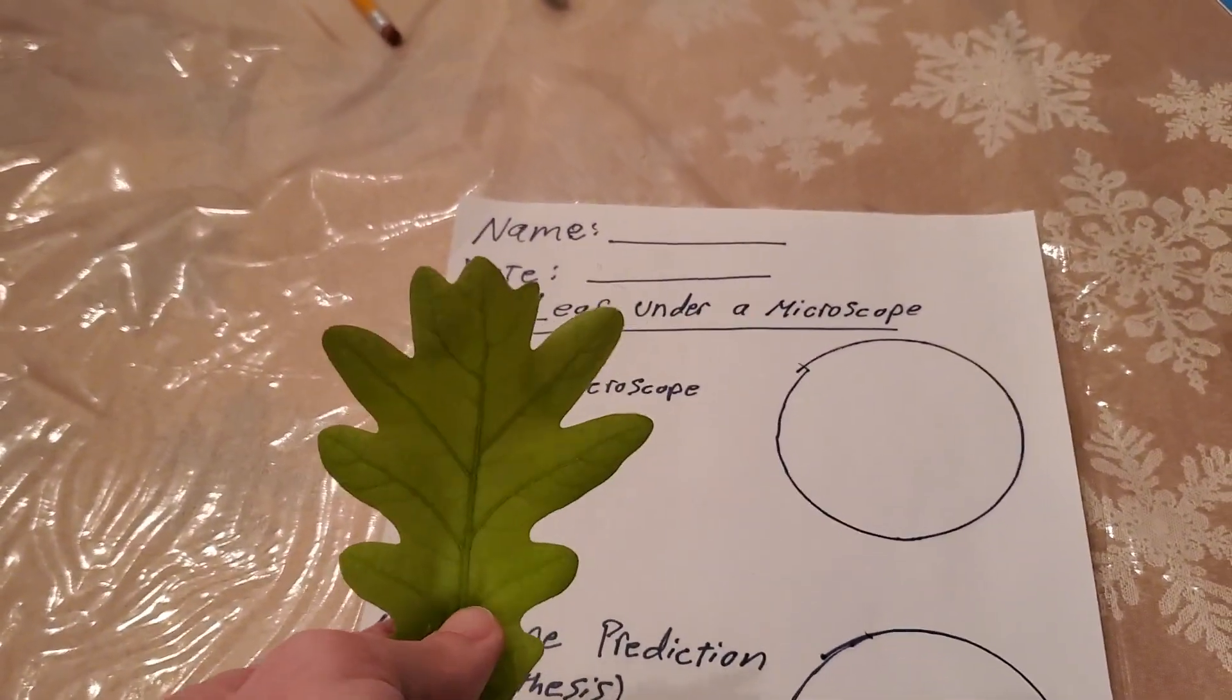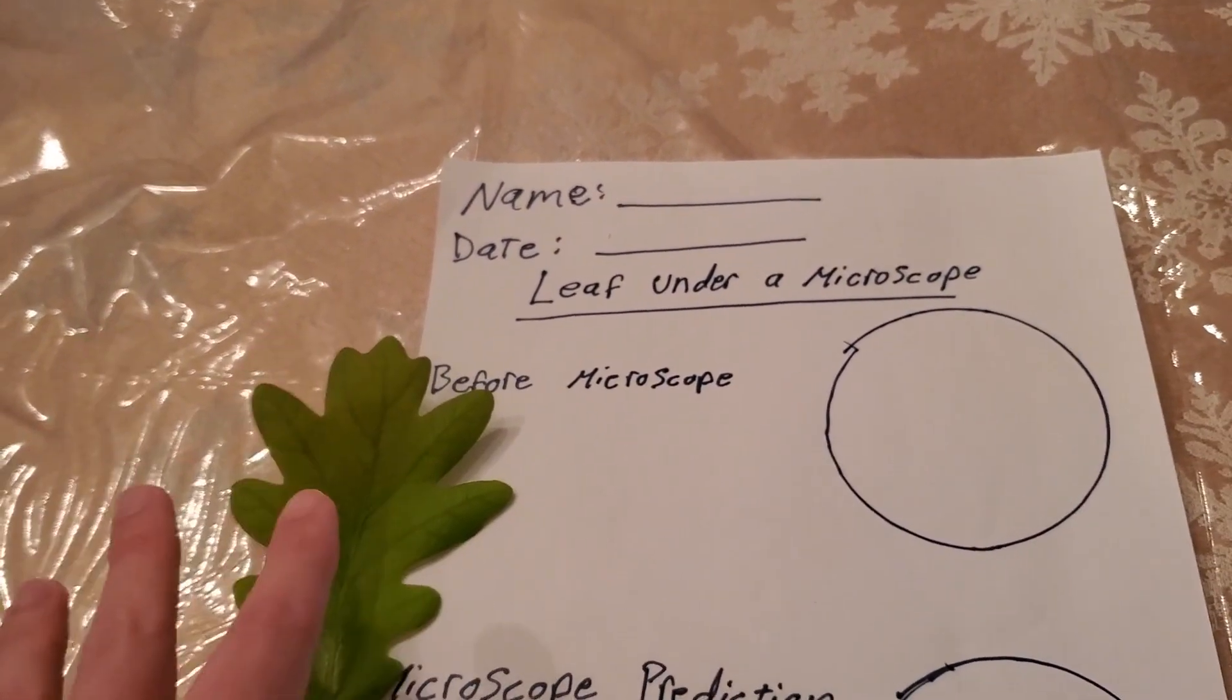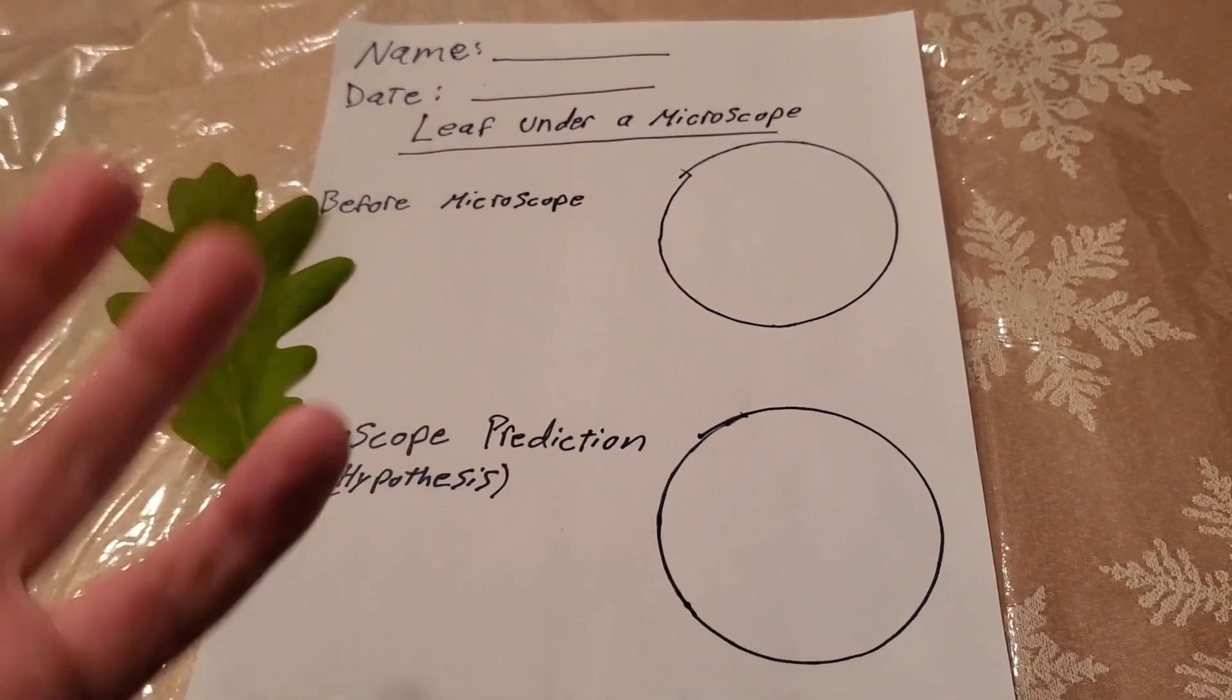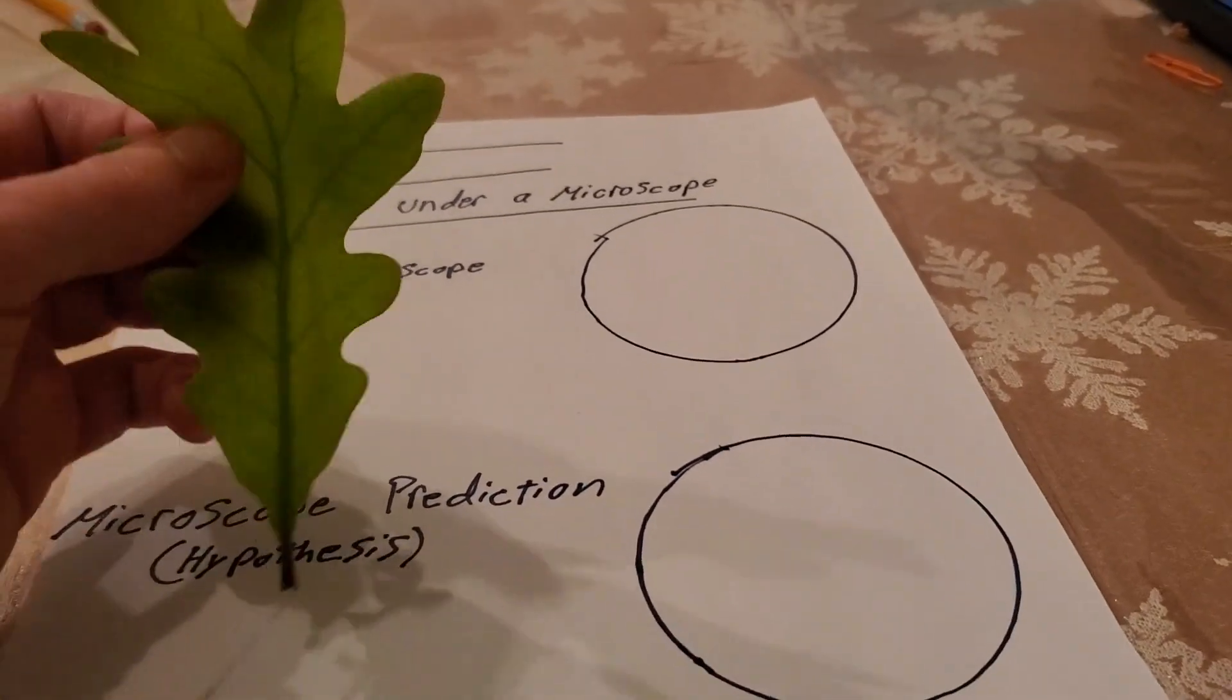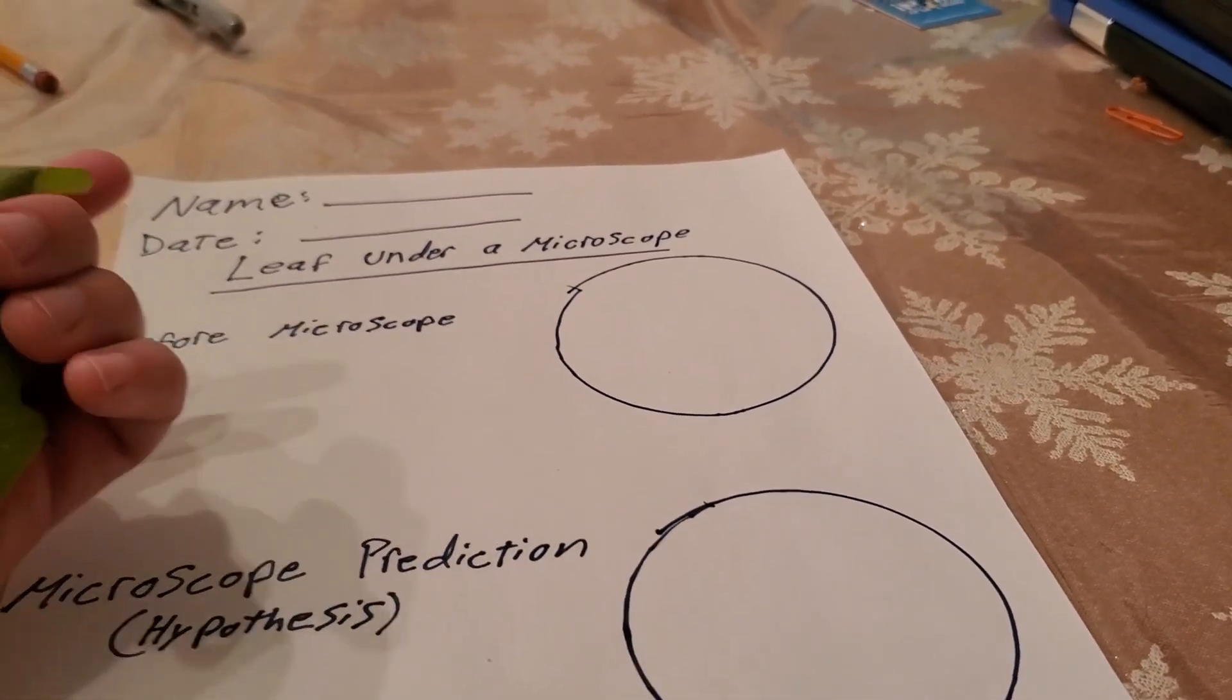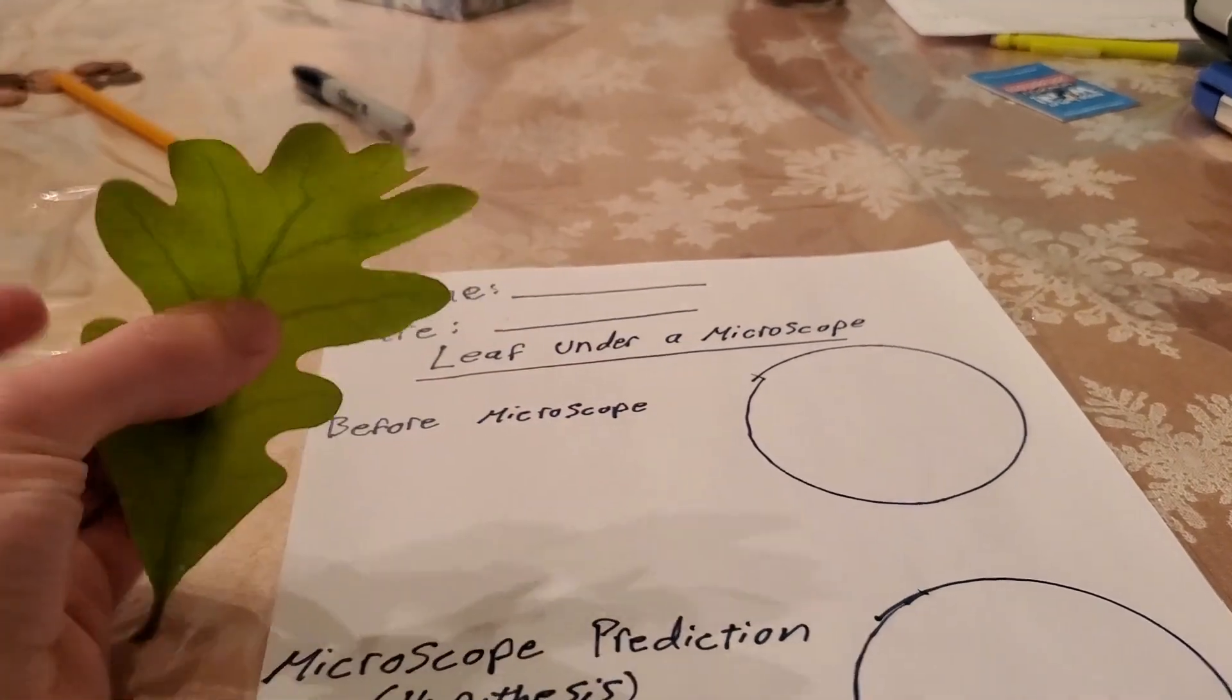So here's the leaf far away. Here's it really close to my phone. But just remember a microscope makes things, it zooms even more than what I was able to do right then. A microscope is super super cool. And so it's going to zoom in a lot, way more than we just could. And we might see some surprising new things we didn't know existed in there. I'm so excited.